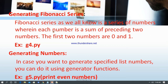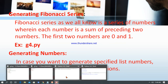Next, generating a Fibonacci series — it is possible. In Python, the Fibonacci series is a series of numbers where each number is the sum of the preceding two numbers. The first numbers are 0 and 1. After that it's the second plus third, fourth, fifth, and so on. We go for g4.py for Fibonacci, and g5.py to print even numbers between particular intervals.